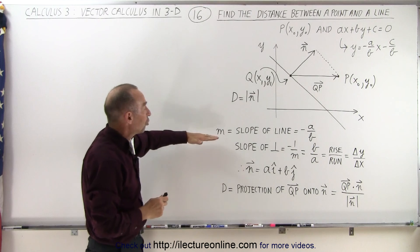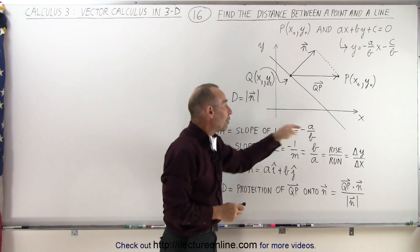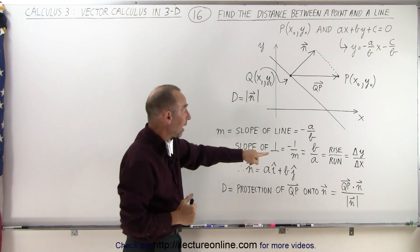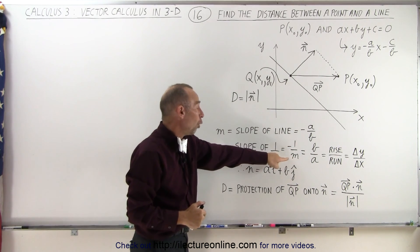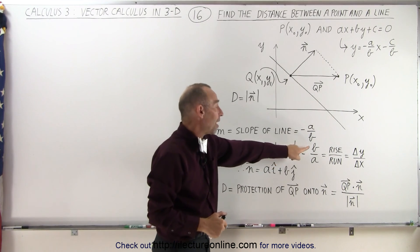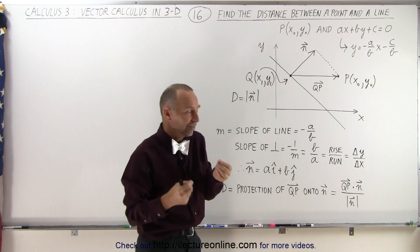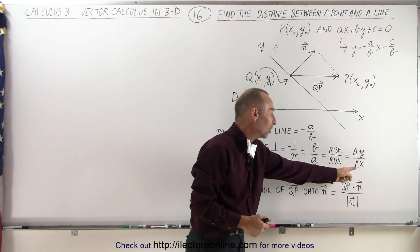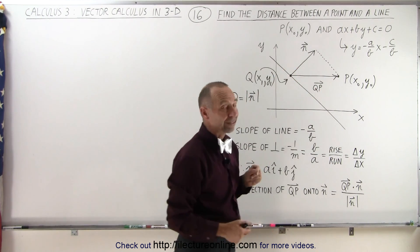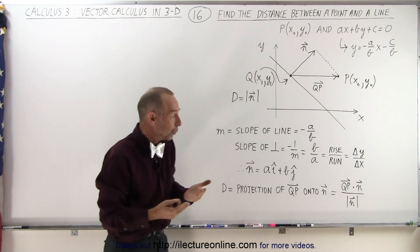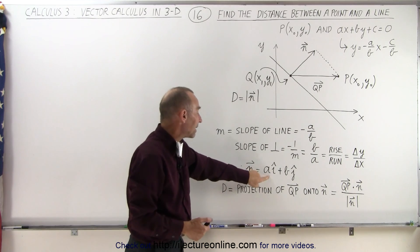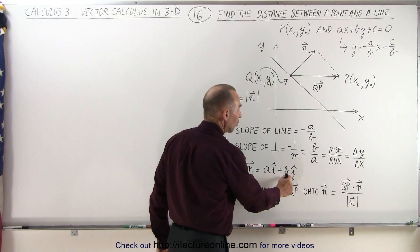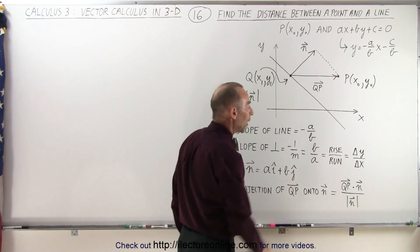The slope of the line M is defined as negative A over B, which means the perpendicular to the line has slope equal to negative 1 over M, which makes it positive B over A. Since slope is defined as rise over run — the change in Y divided by the change in X — that is the slope of our normal vector N. Therefore, we can write the normal vector N as A times i plus B times j, representing the components in the X and Y directions.